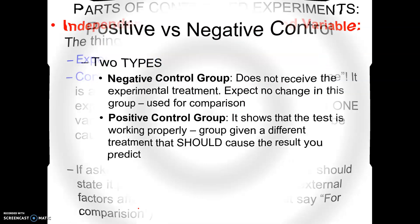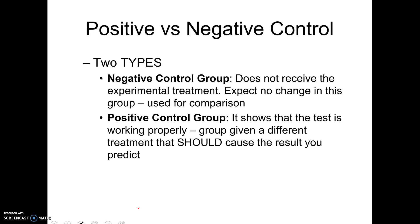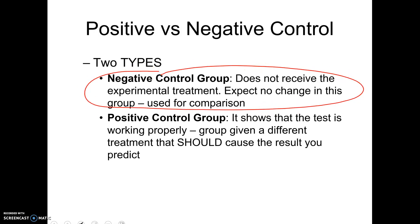There are actually two kinds of control groups, and not every experiment has both — don't assume you always need to find both. The negative control group is the one you're most familiar with: it's the group that doesn't receive the treatment, like the group with no music. You do not expect a change from this group — you expect normal results. A positive control group, which some experiments have but not all, shows us that the test is working properly. It's typically a group given a different treatment that we do expect to cause the result.